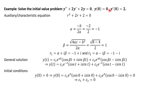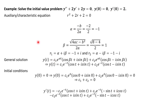Our second initial condition uses the first derivative, so we have to differentiate our function. It looks a little daunting but it's not so bad — you just notice that you have a product of two factors in each term, so you need to use the product rule. The derivative of the first factor times the second factor, plus the first factor times the derivative of the second factor, applied to each term. Once you have that derivative, we go to the next slide.